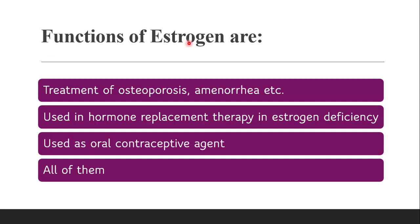Next question: functions of estrogen are — whether estrogen is used in treatment of osteoporosis, amenorrhea (complete absence of menstrual cycle), hormone replacement therapy in case of estrogen deficiency, or as an oral contraceptive agent. The correct answer is all of them. Estrogen, a female sex hormone, deals with the regulation of the menstrual cycle and is used in all the above conditions.